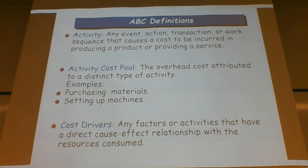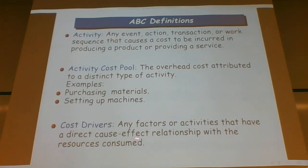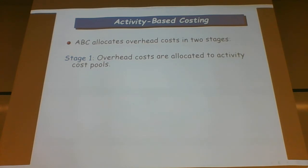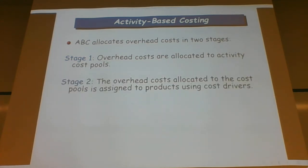We're not talking about the costs of running the machines, but about the costs involved in getting the machines ready — many machines require significant setup time before they can operate at optimal efficiency. Cost drivers are any factors or activities that have a direct cause-and-effect relationship with resources consumed, which translate into overhead dollars. ABC allocates overhead costs in two stages: first, overhead costs are allocated to activity cost pools; second, those costs are assigned to products using cost drivers.